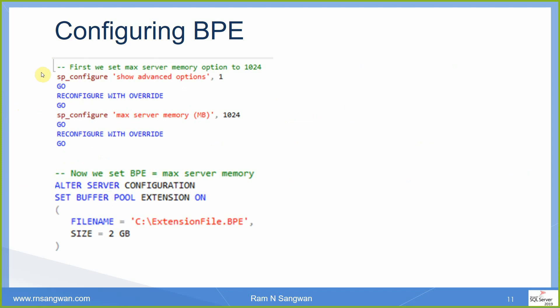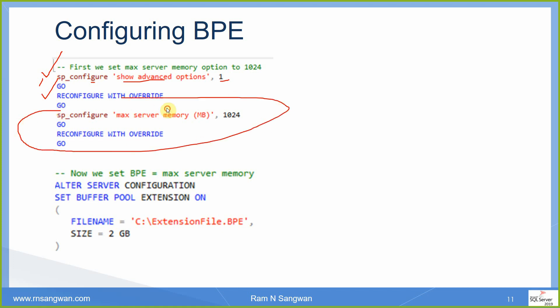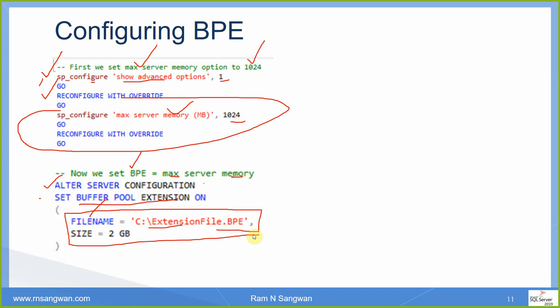To configure BPE, use SP_CONFIGURE, set 'show advanced option', then RECONFIGURE WITH OVERRIDE. Set max server memory to 1024 first, then configure BPE using: ALTER SERVER CONFIGURATION SET BUFFER POOL EXTENSION ON WITH (FILENAME = 'C:\extension_file.BPE', SIZE = ...). This file will be created on your C drive — assuming it is SSD — giving you an additional, faster disk location for your cache.